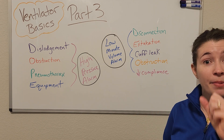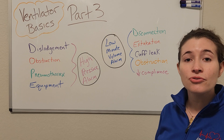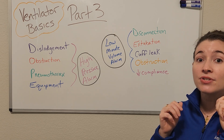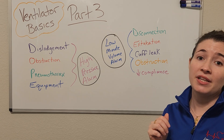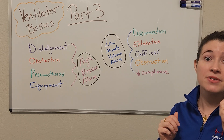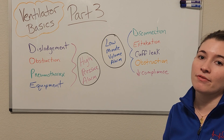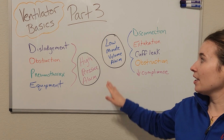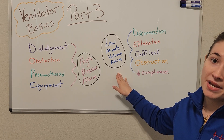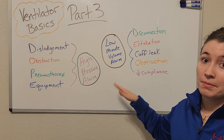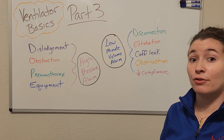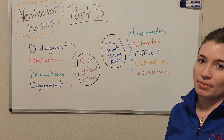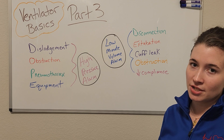Extubation is another cause. If the patient pulls out their breathing tube, or the tube comes above the vocal cords, that will absolutely cause a low minute volume alarm and we would need to intervene quickly to restore oxygen to the lungs.